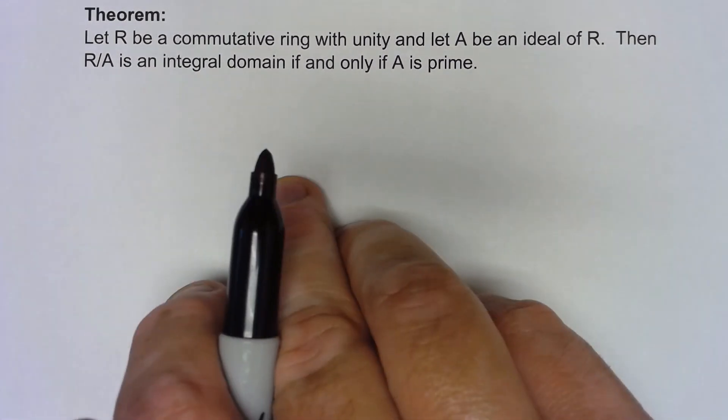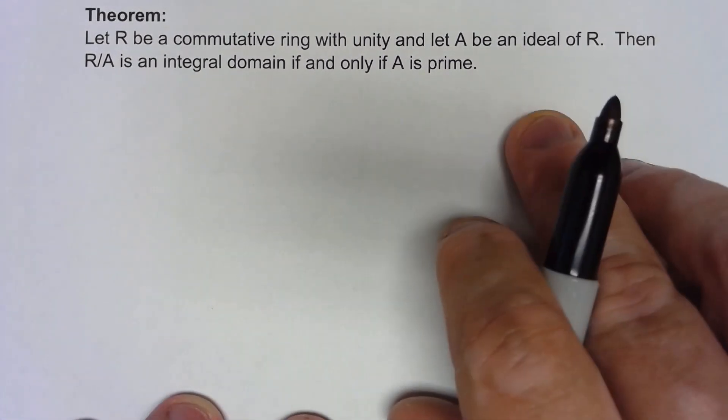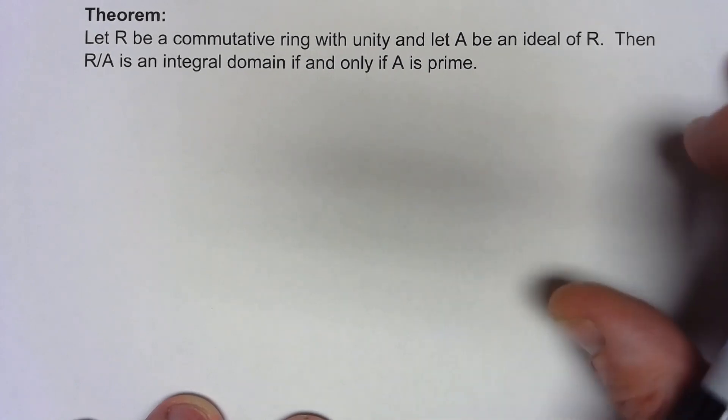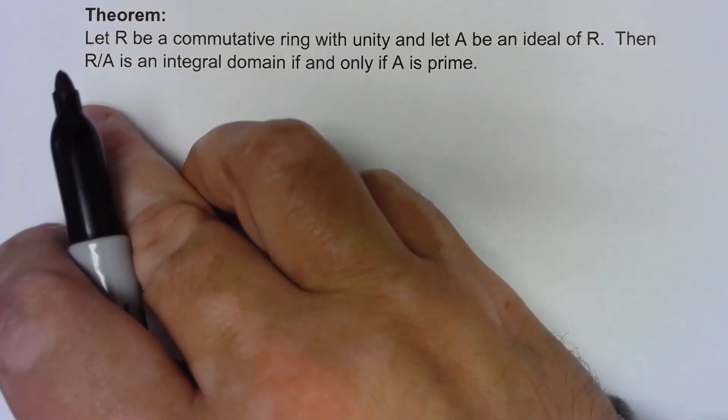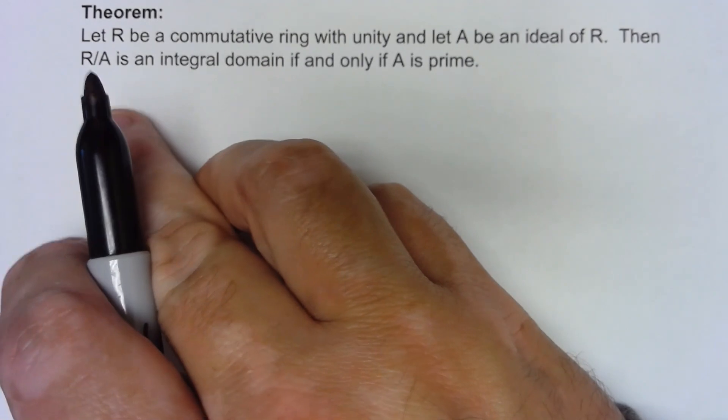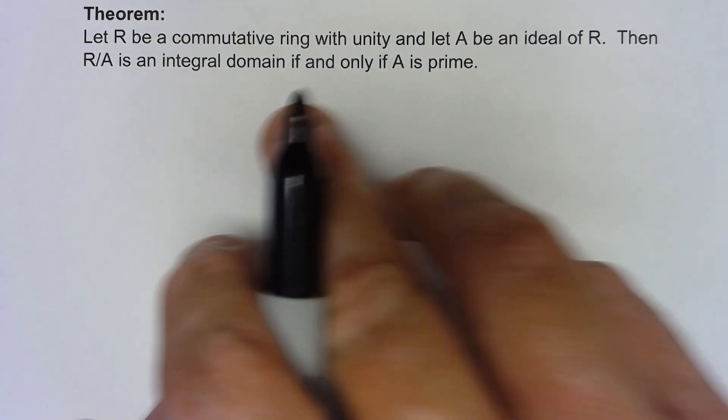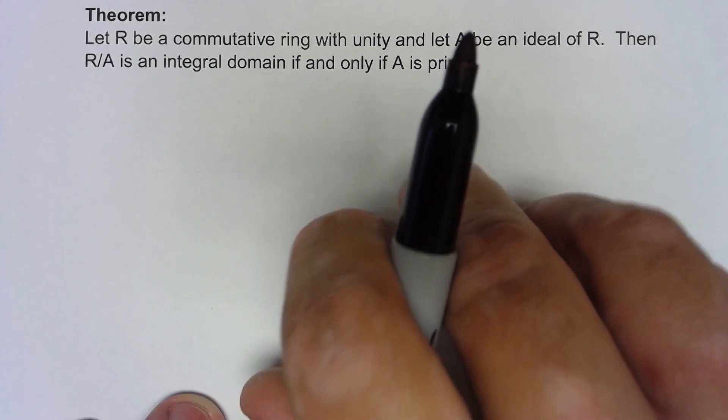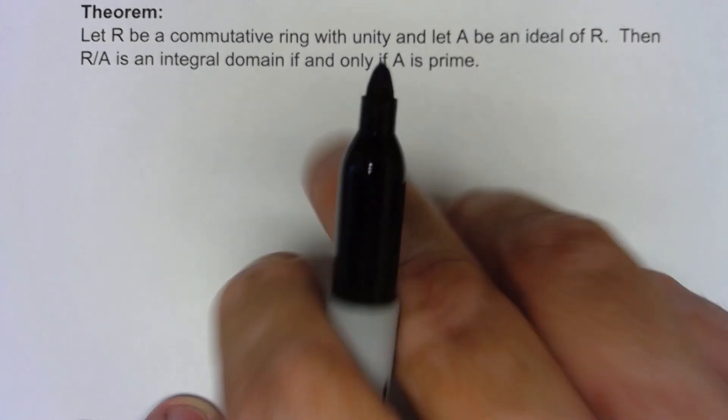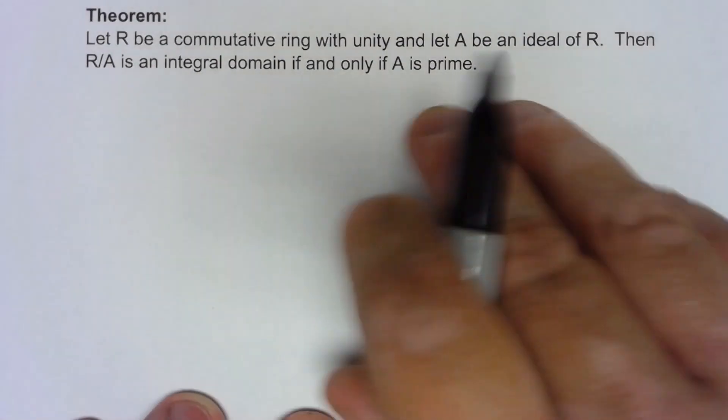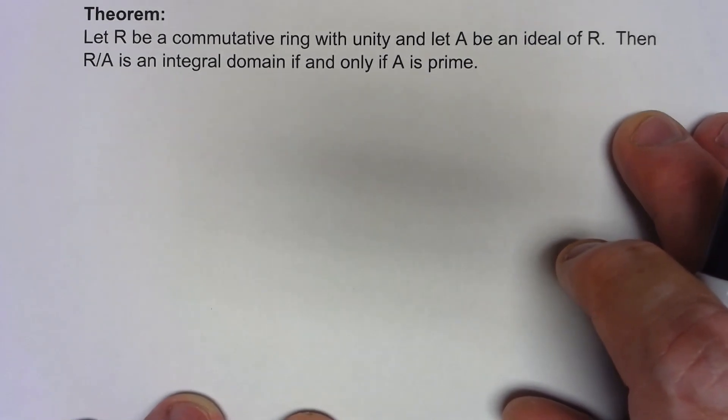Let's say we have a commutative ring with unity and we've got an ideal of the ring. Then the factor group R/A is an integral domain if and only if that ideal was a prime ideal. It's an if and only if statement, so there's two directions to prove.